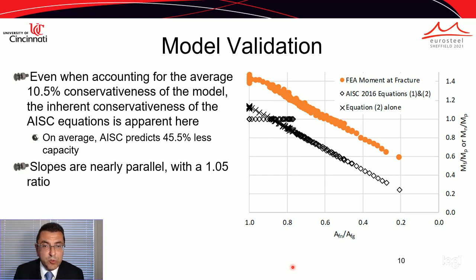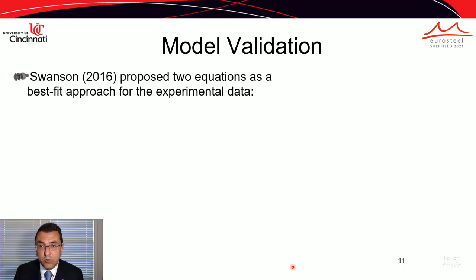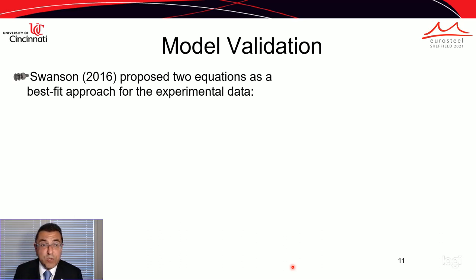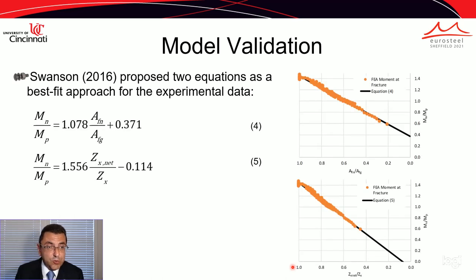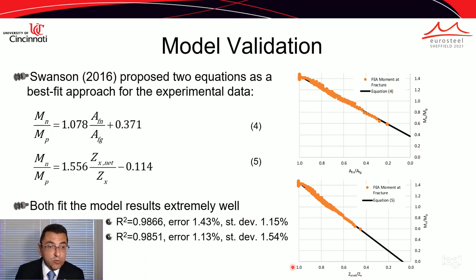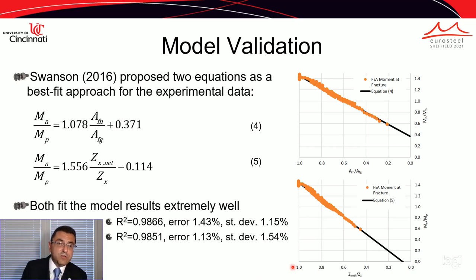In 2016, Swanson proposed two equations using a best-fit approach to the experimental data. Compared against the results of our model, both equations yield really good results: R-squared is well above 0.98 for both cases, and the error and standard deviation are just above 1%. Neither equation is particularly better than the other — both work very well.